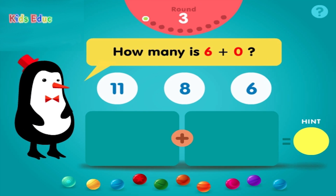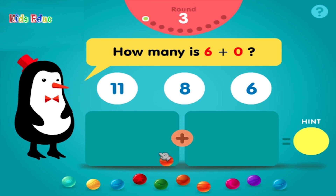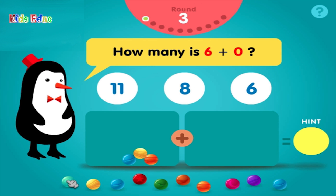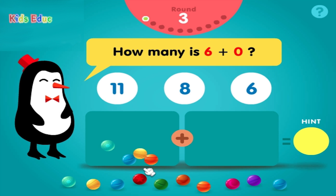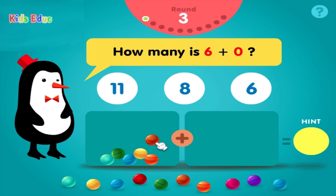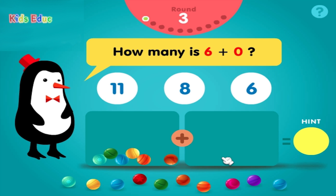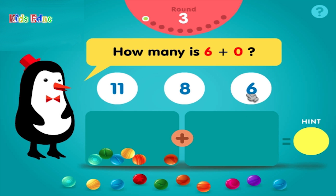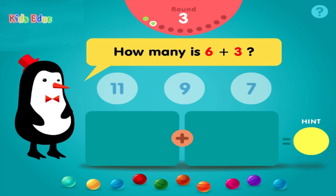How many is 6 plus 0? 1, 2, 3, 4, 5, 6, plus 0, equals 6. You got it!